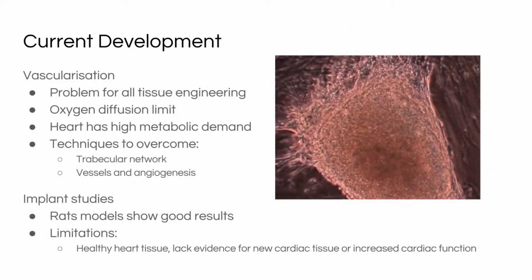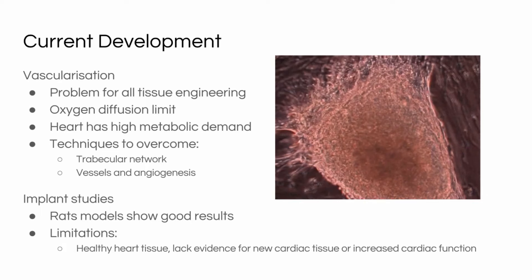A limiting factor for all branches of tissue engineering is vascularisation — the blood supply to a tissue. The diffusion limit of oxygen is 100 to 200 micrometres, but this value is dependent on the metabolic activity of the tissue. Since cardiac tissue is highly metabolic, even small tissue-engineered constructs need to be vascularised. Techniques to overcome this have used a networked chainmail-like structure of myocytes, natural vessel implantation, or vessel formation known as angiogenesis.